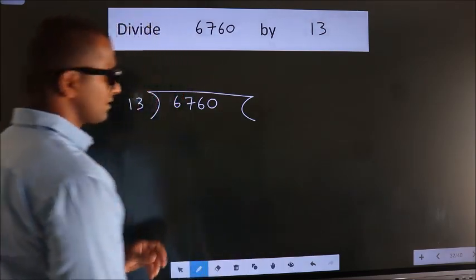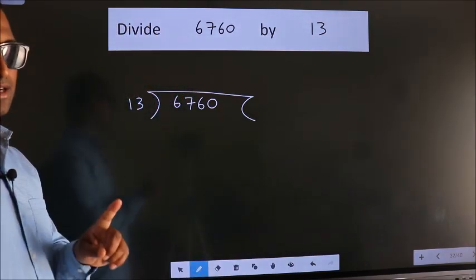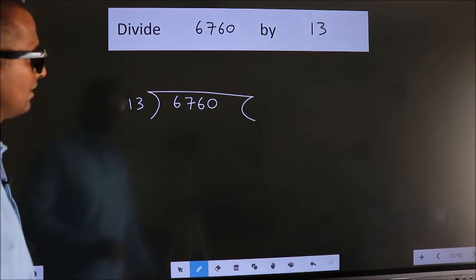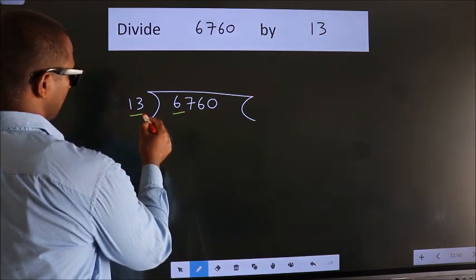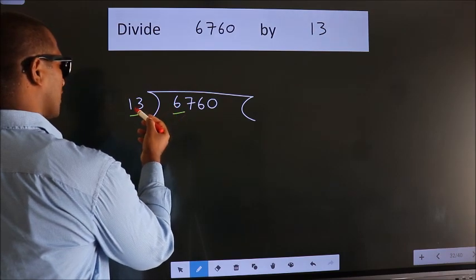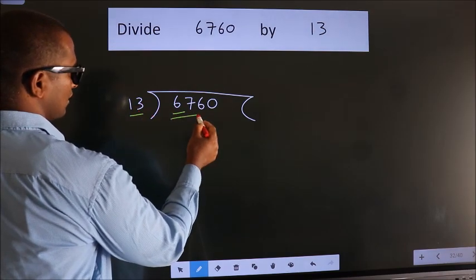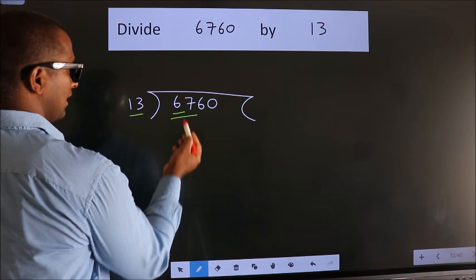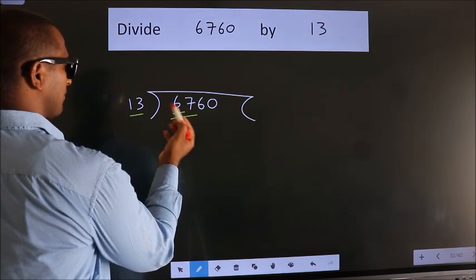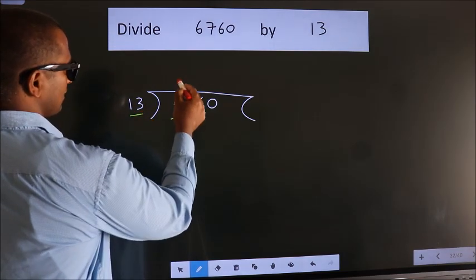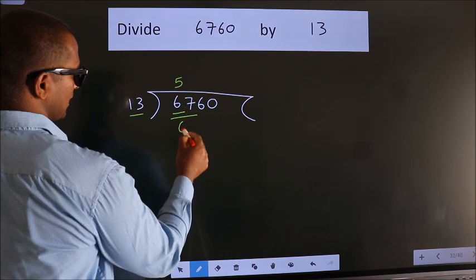This is your step 1. Next, here we have 6. Here 13. 6 smaller than 13. So we should take two numbers: 67. A number close to 67 in 13 table is 13 fives, 65.